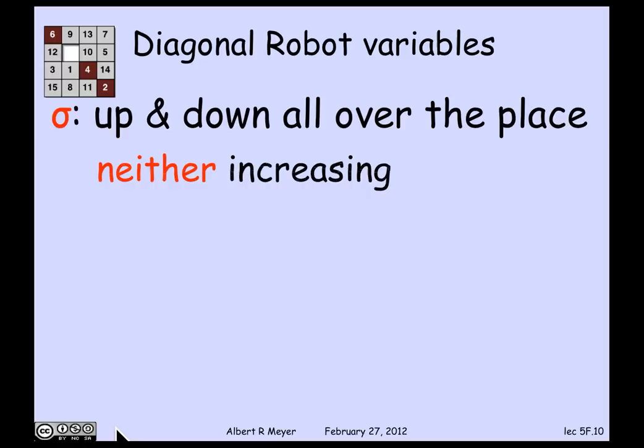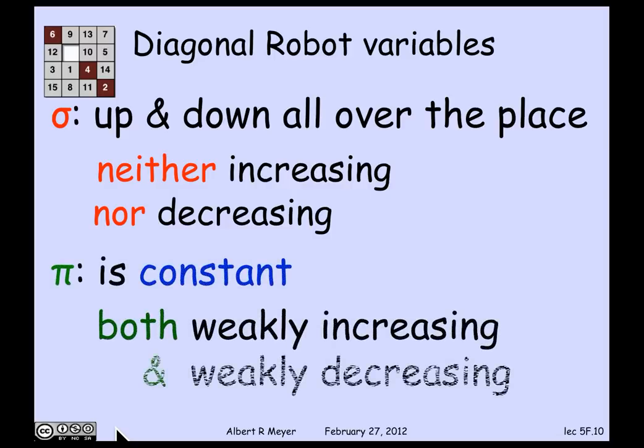If we looked at the example of sigma, the sum of the coordinates, that's up and down all over the place. It's neither increasing nor decreasing. The other extreme is the parity variable pi, which was the 0 or 1, according to whether or not the sum of the coordinates was even or odd. And pi is a constant.